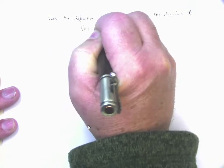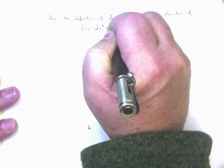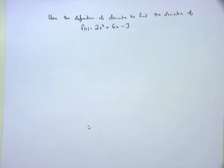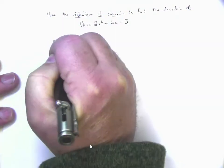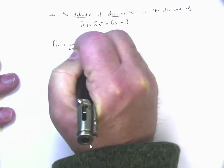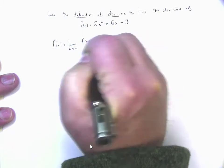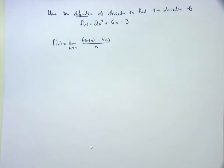I'll keep pointing this out because this is the algebraic way of doing it. I'll probably give you one problem like this, but it will be worth a big point total. When you hear 'definition of derivative,' you must use the formula: f′(x) = lim(h→0) [f(x+h) − f(x)] / h. This uses our limit knowledge from the beginning of chapter 2 and chapter 1.